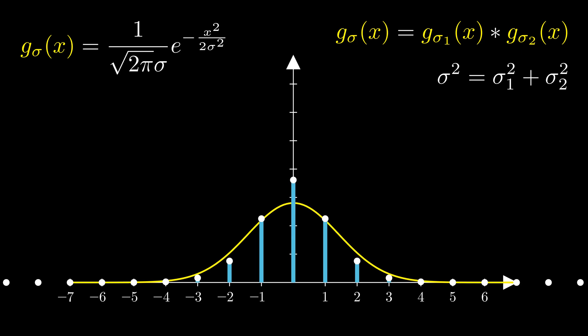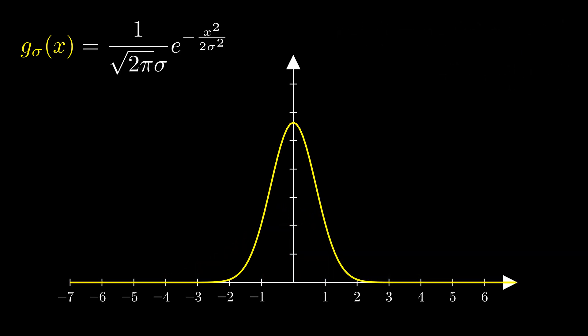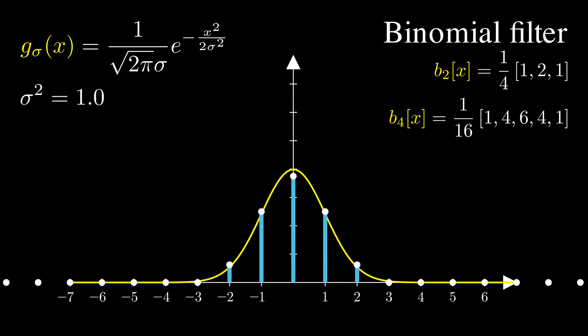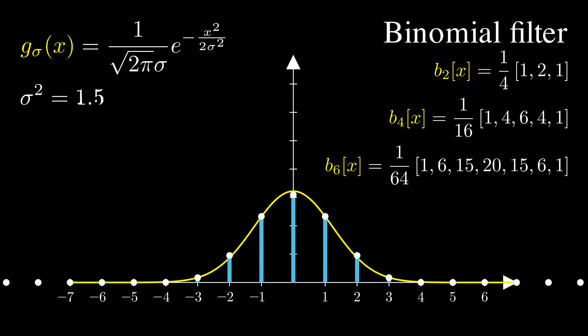Fortunately, there is an effective approximation using binomial filter. Before normalization, binomial filters have integer coefficients, making them more efficient for hardware computations. Here is a binomial filter that approximates a Gaussian with variance 0.5. The best part, convolving two binomial filters, gives another binomial filter. By applying a simple 3-tap binomial filter iteratively, we get an effective approximation of a Gaussian filter with a larger variance. And the approximation improves as we increase the number of iterations.